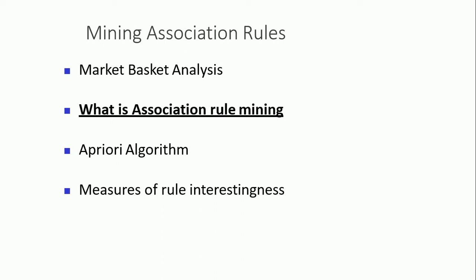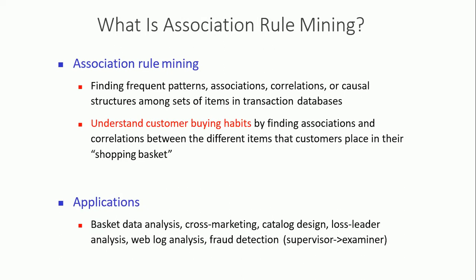So what is actually association rule mining? It is about finding frequent patterns, associations, correlations, and causal structures among items in a transaction database. For example, if I'm purchasing butter, then I will definitely purchase bread also. So that is a pattern — a person purchasing this item must also purchase that item. These are pattern associations. Correlation refers to the likelihood of purchasing one item given another.